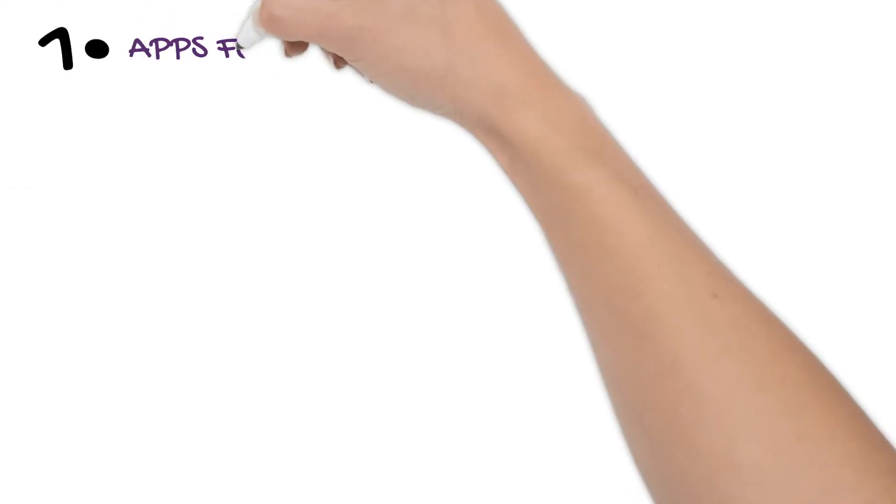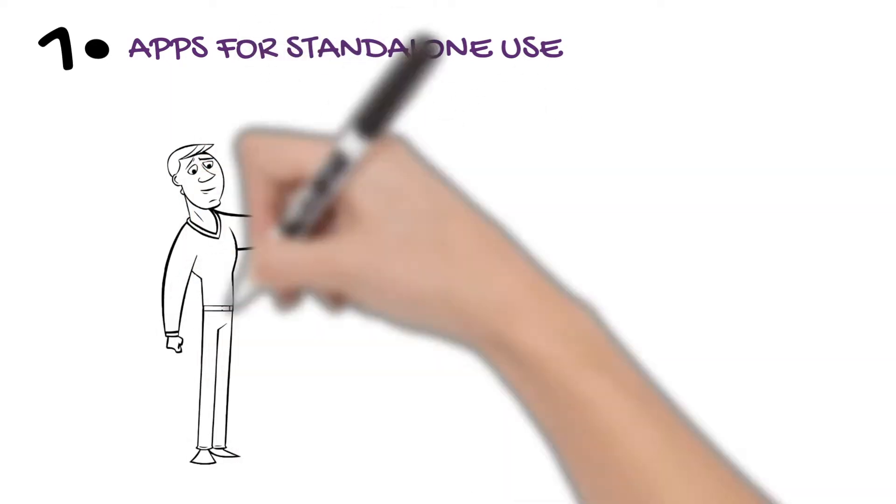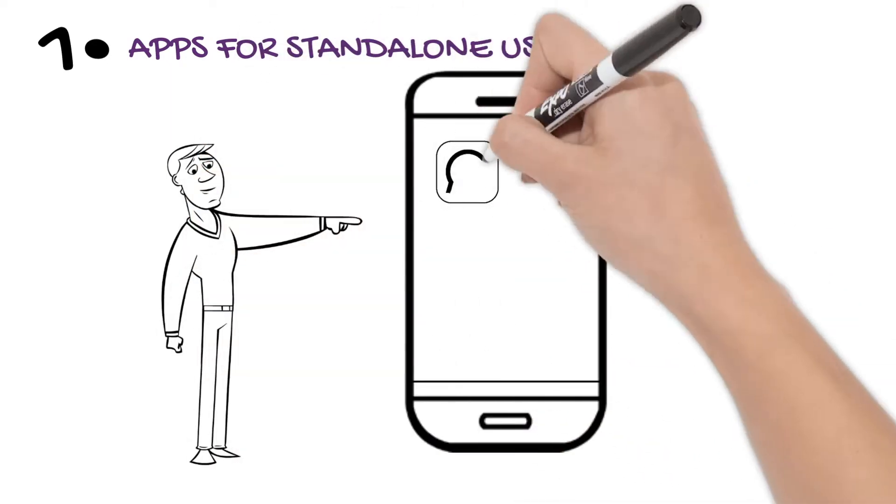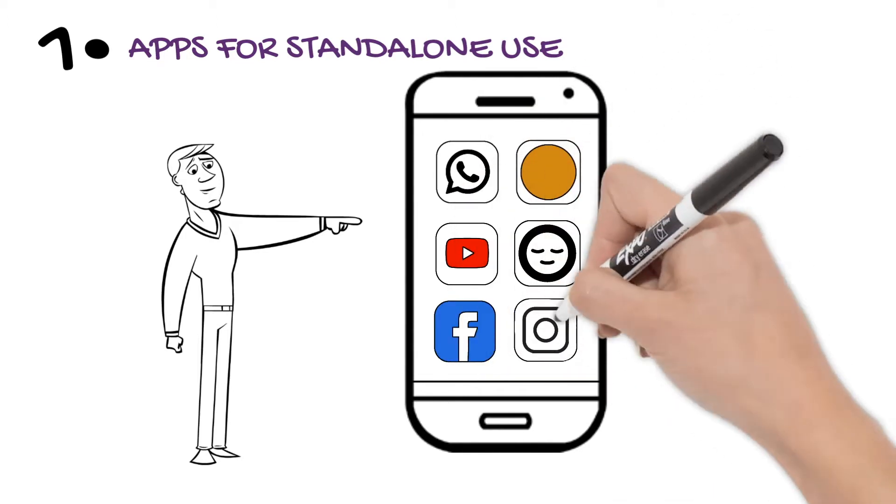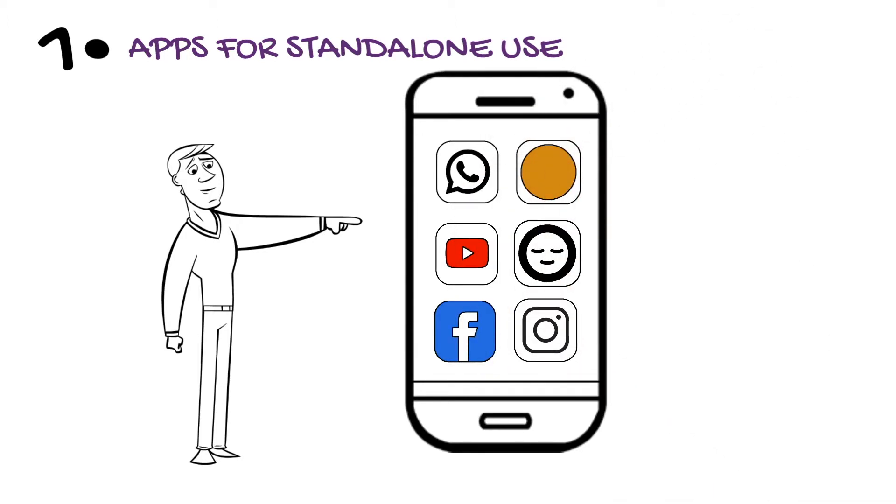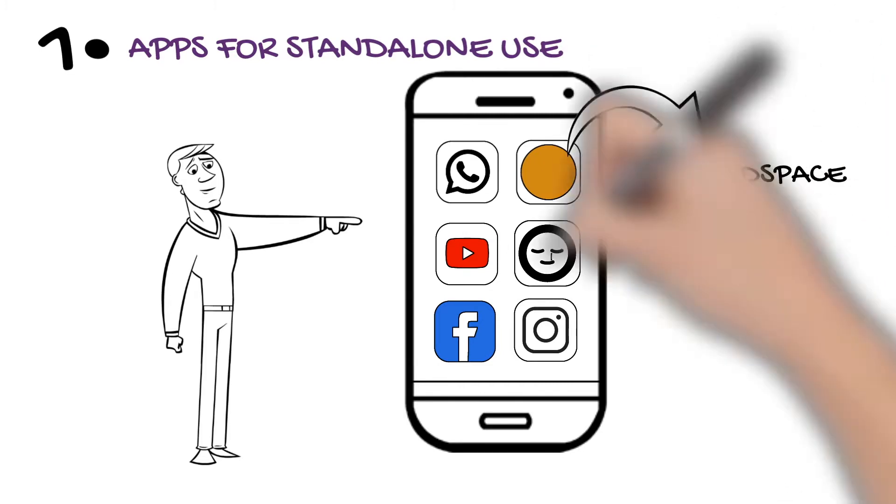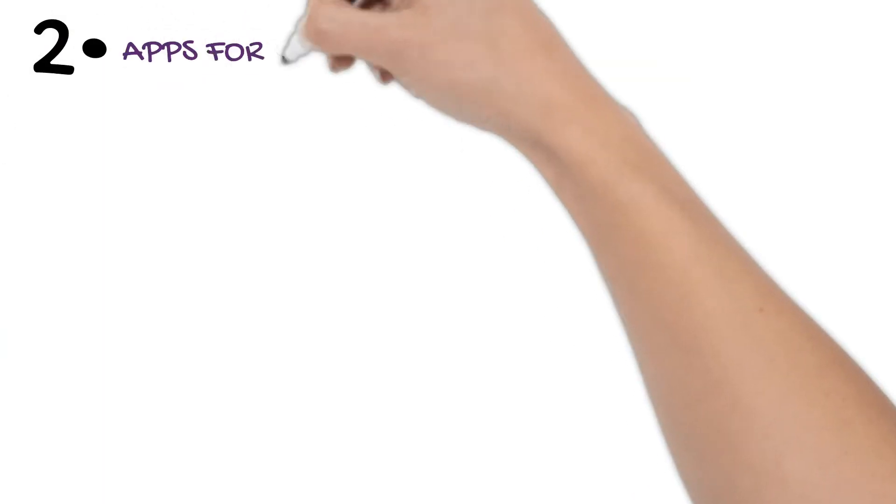Type one: Apps for standalone use. These apps provide information on specific strategies to help enhance mental health. They are easy and inexpensive or free, but are self-directed and require motivation. Some examples include Headspace and MindShift CBT.